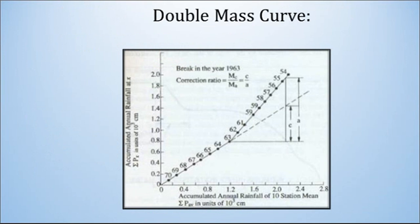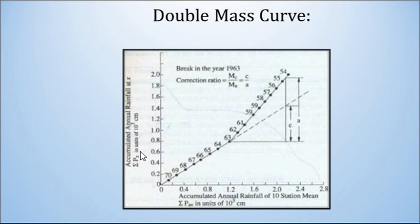Let us understand everything in detail with the double mass curve figure. The graphical representation shows on the X-axis the accumulated annual rainfall of 10 stations mean — meaning 10 stations are taken as base stations. On the Y-axis is the accumulated annual rainfall at station X, that is summation PX, in units of 10³ cm. The accumulated annual rainfall for the 10-station mean, summation P-average, in units of 10³ cm, is plotted on the X-axis. Together, both values form a single point on the graph.